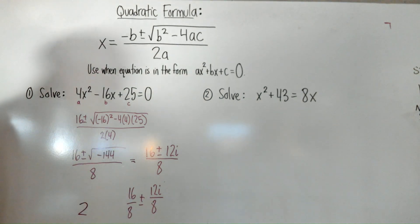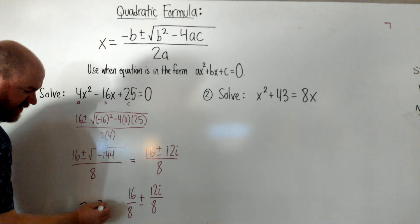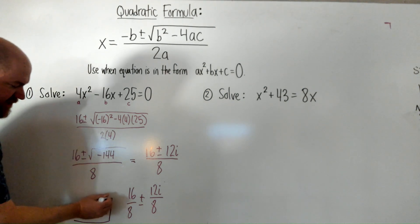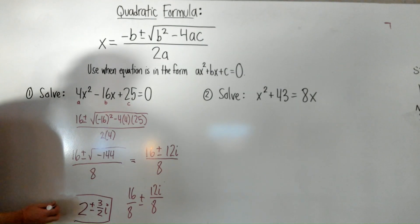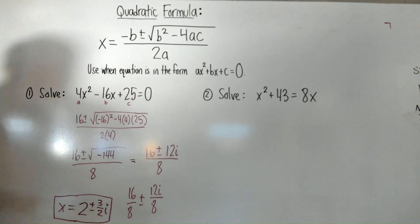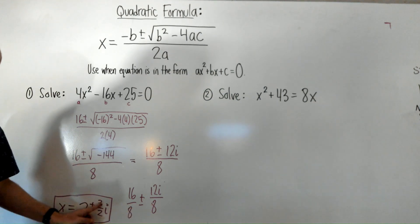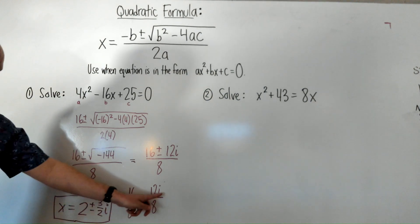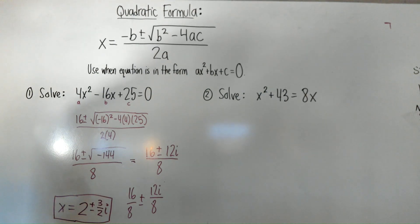12 over 8 cannot be fully simplified, but it can be reduced to 3 halves. So, our final answer here is going to be 2 plus or minus 3 halves i. That's our answer to this question here. I would say x equals 2 plus or minus 3 halves i. Where do the 3 halves come from? Well, 12 over 8 reduces to 3 over 2. And the i was on top. You can put the i on top if you like, but it can also be attached to the fraction next to it.